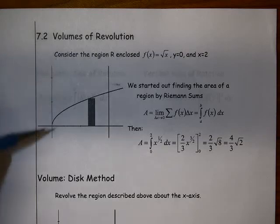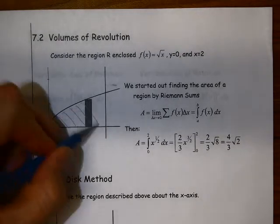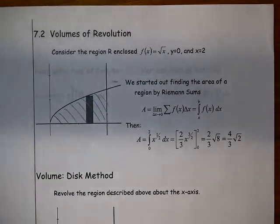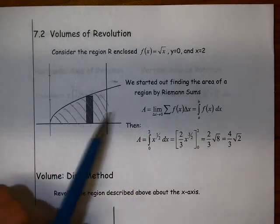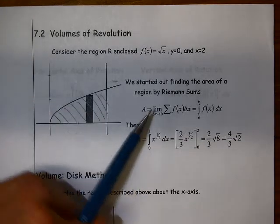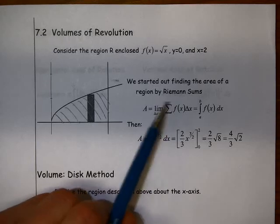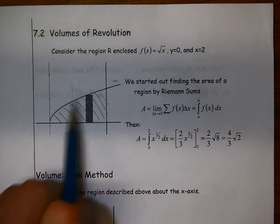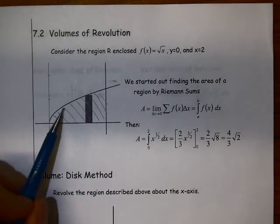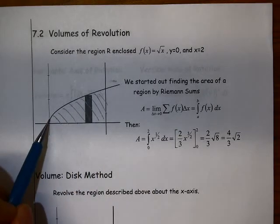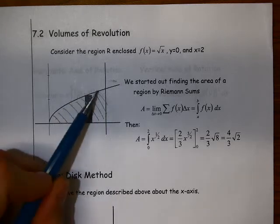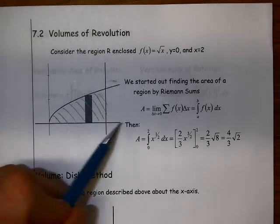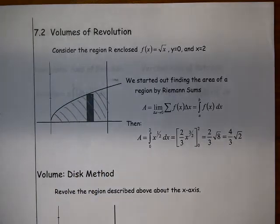Here is the region R that we're talking about. We find that area, back in Chapter 4 by using Riemann sums, and it ends up being a definite integral. We integrate from 0 to 2 of this function, and we find the area that's bounded by the square root of x, x equals 2, and y equals 0.